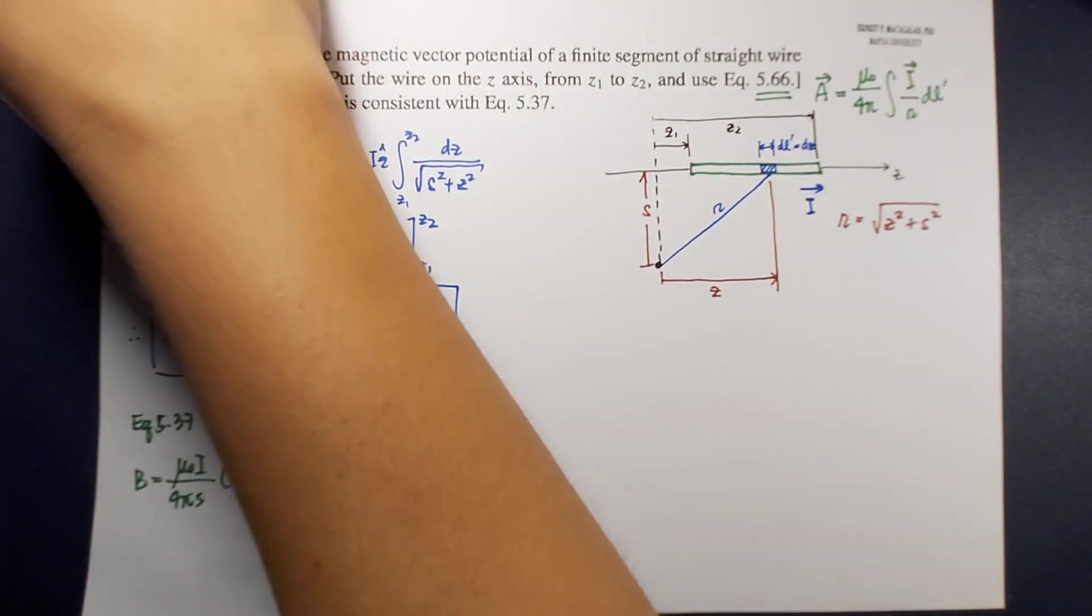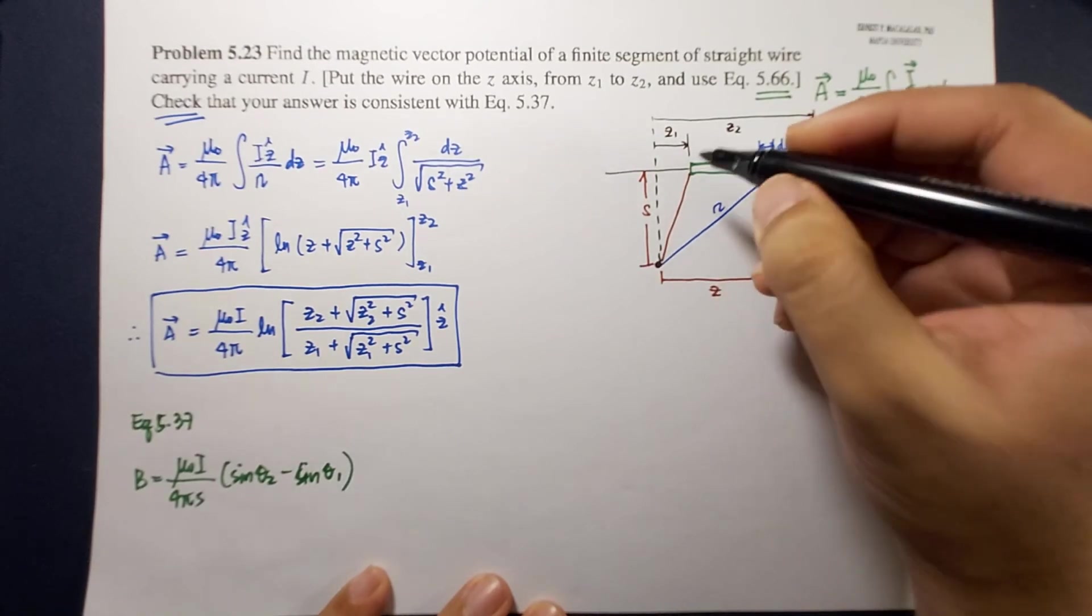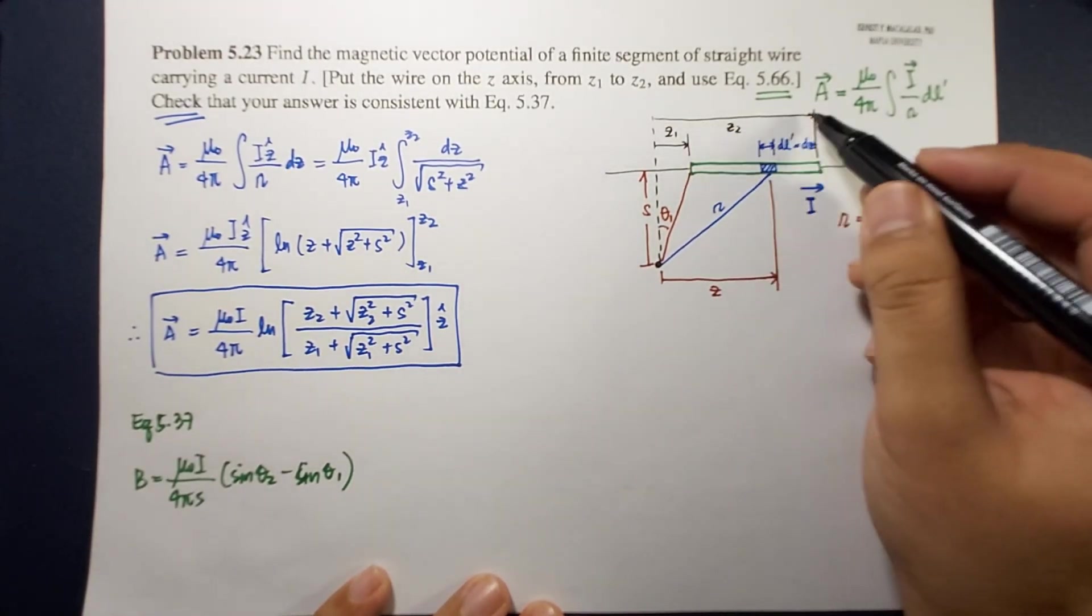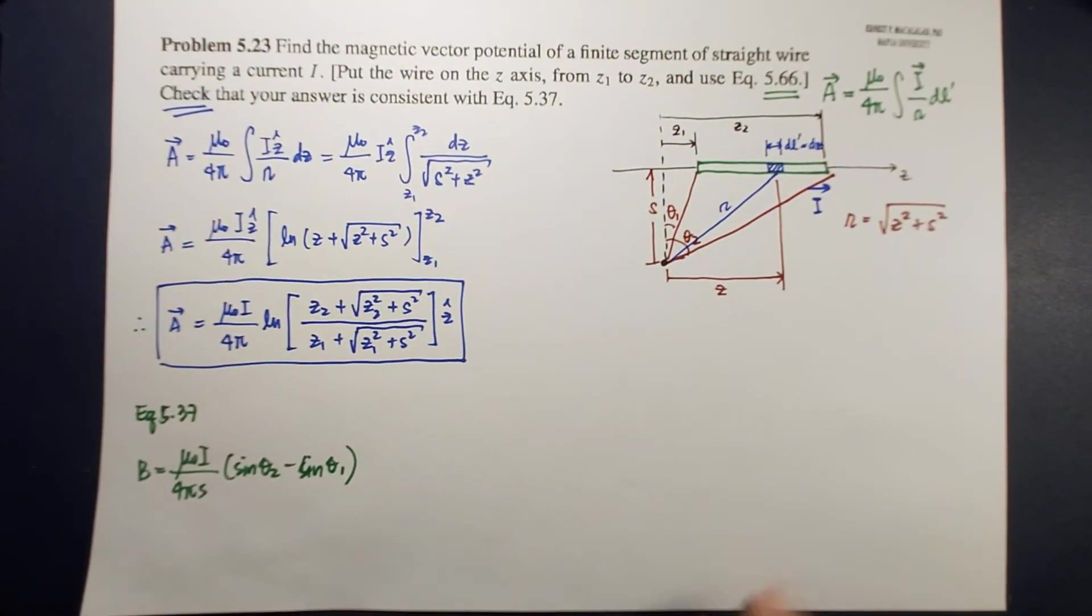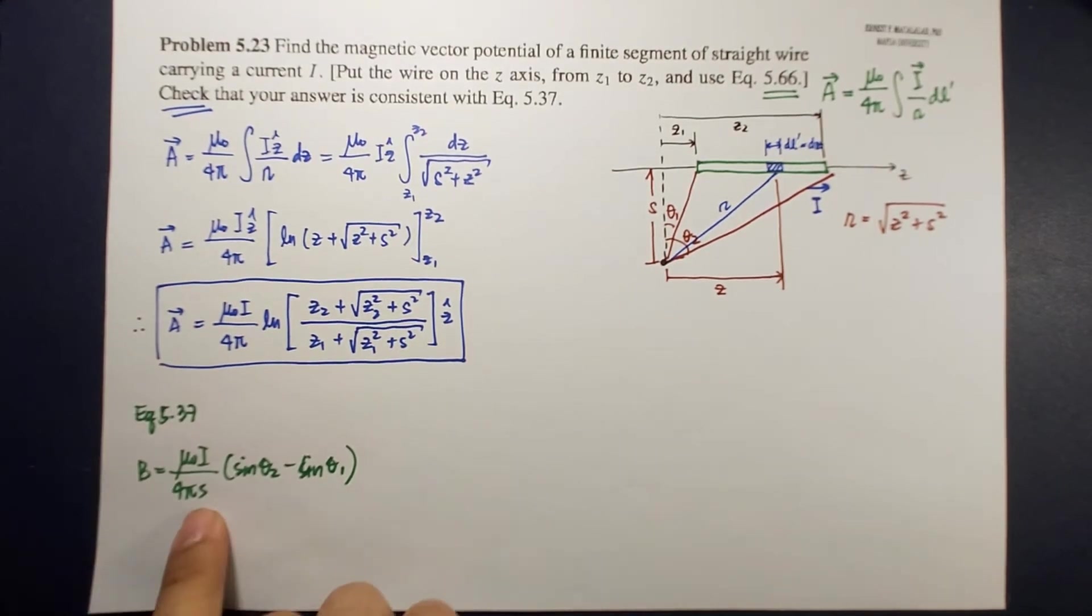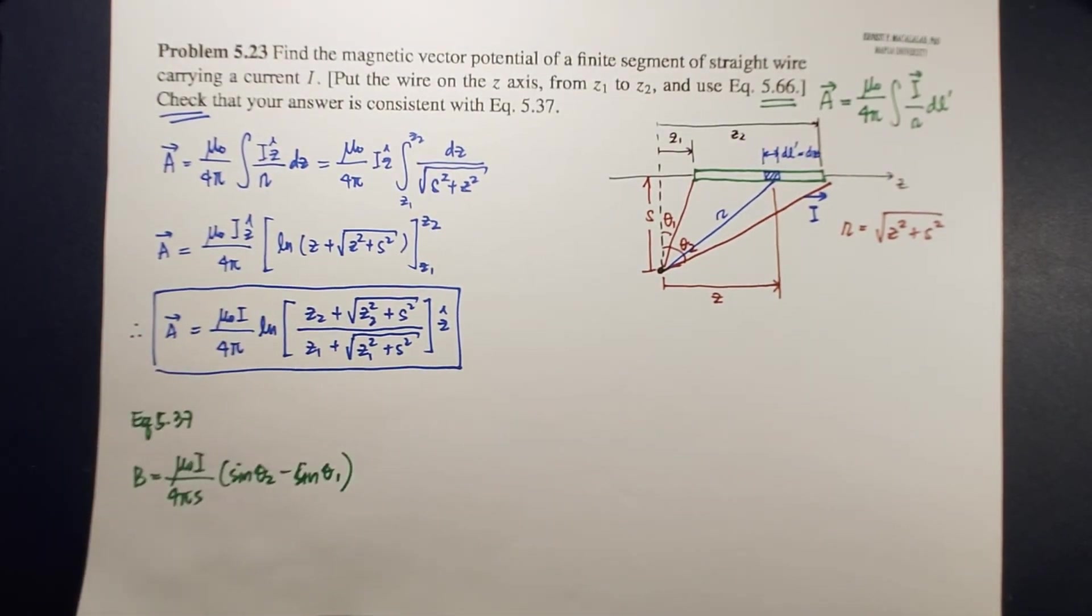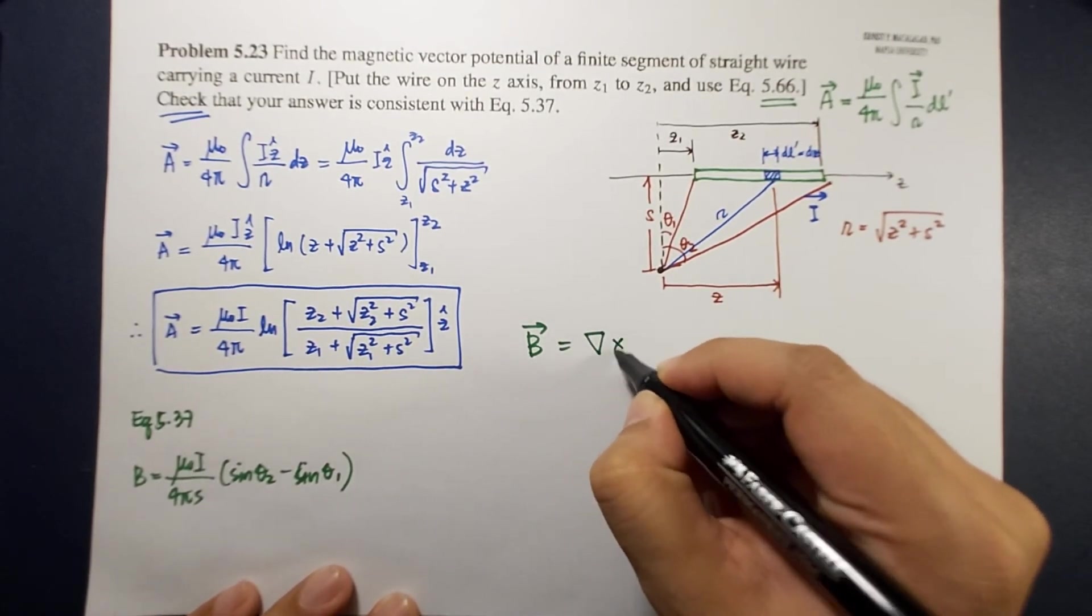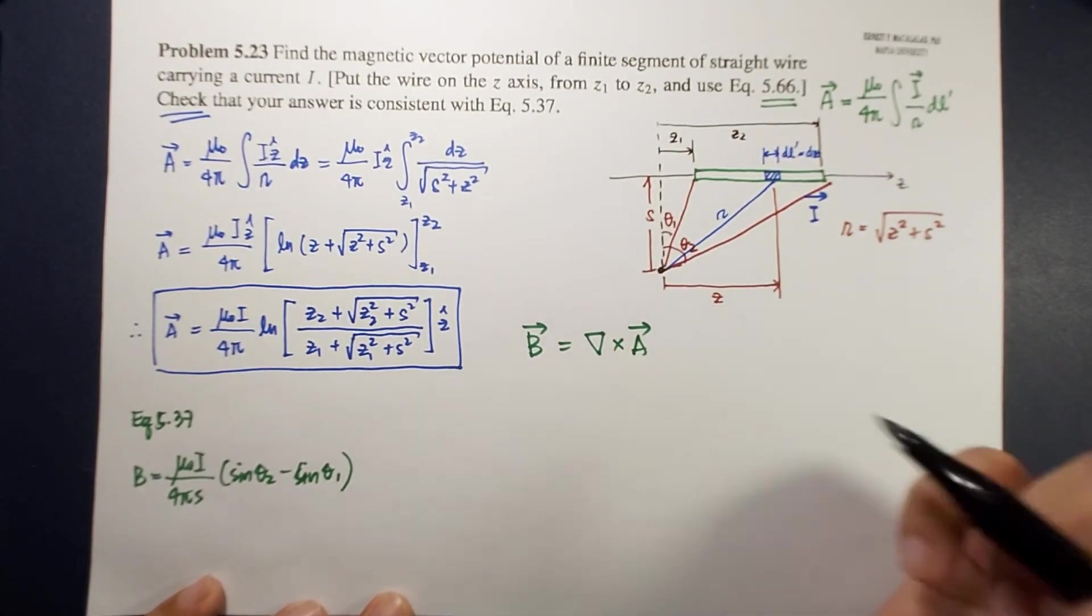So from here we can define what our thetas are. Because this is z1 so we can define theta 1 to be this, and then if this is z2 therefore we can define this as our theta 2. So how do we know this one? Remember that the magnetic field is related to the magnetic vector potential by this equation where magnetic field is equal to the curl of the magnetic vector potential.